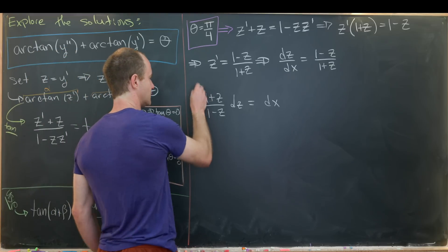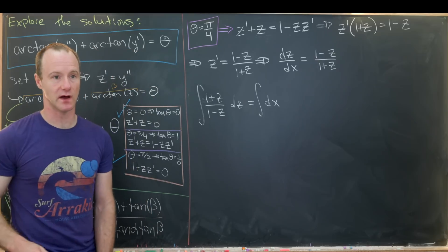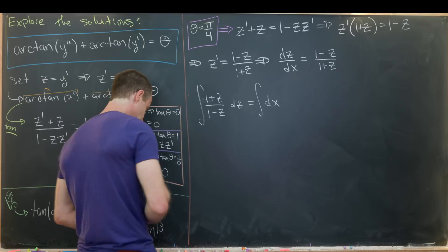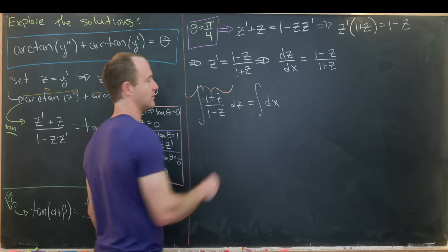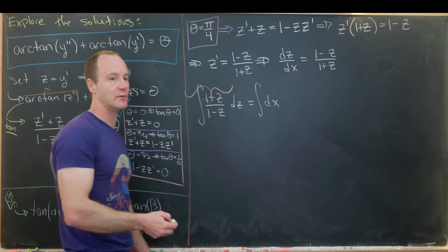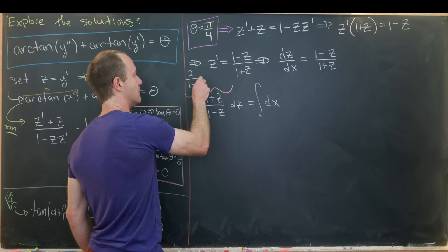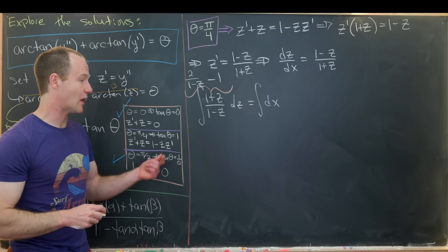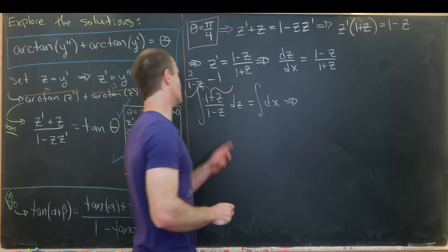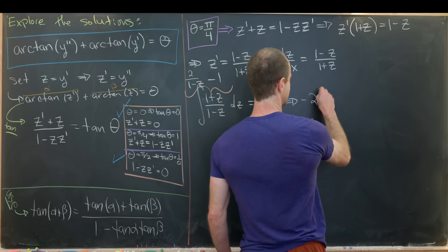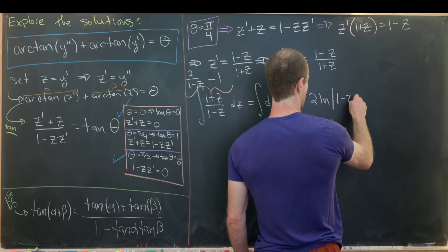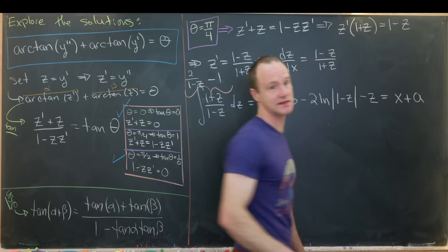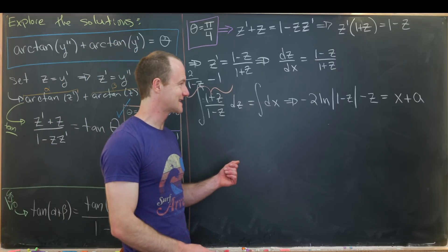Using separation of variables — writing z' as dz/dx and separating — we get (1 + z)/(1 − z) dz = dx. Integrating both sides: the left side simplifies since (1 + z)/(1 − z) = −1 + 2/(1 − z). Integrating gives −2·ln|1 − z| − z = x + a.